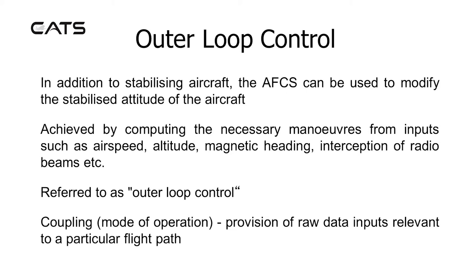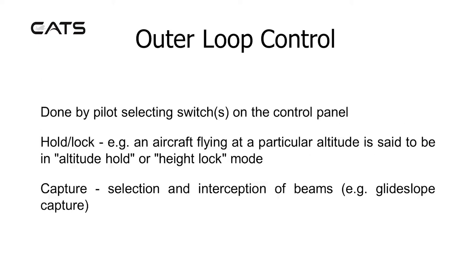Coupling, as a mode of operation, is the provision of raw data inputs relevant to a particular flight path, done by selecting switches on the control panel. Hold lock is where an aircraft flying at a particular altitude is said to be in altitude hold or height lock mode, for example. Capture is the selection and interception of beams, for example glide slope capture.